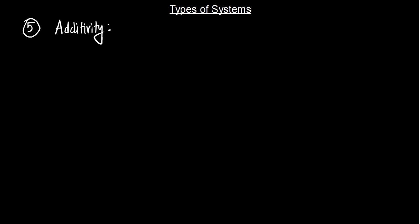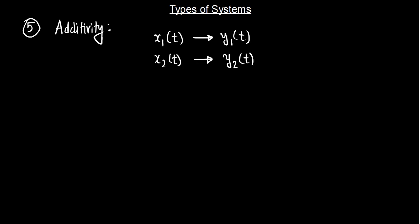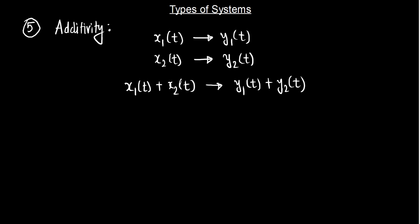Consider if you have two inputs: x1(t) that produces an output y1(t), and another input x2(t) that produces another output y2(t). We then do an experiment: if we add the two input signals x1(t) and x2(t) and check the output, the output must also be the addition of the two individual outputs, equal to y1(t) plus y2(t). If this is the case, the system is said to be additive.